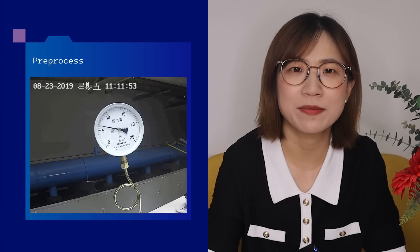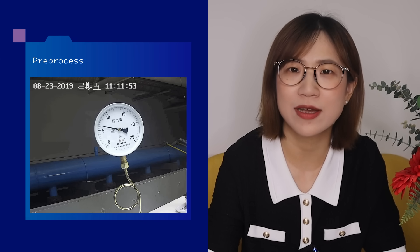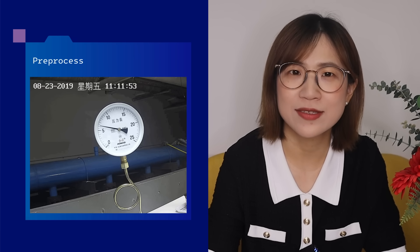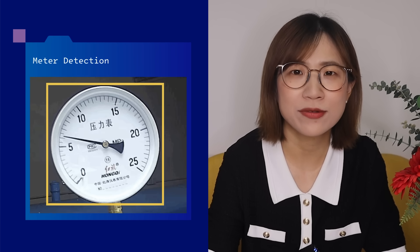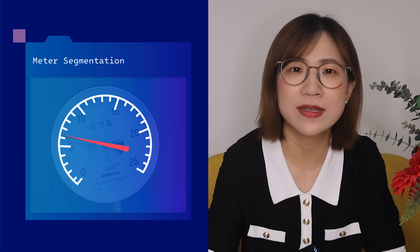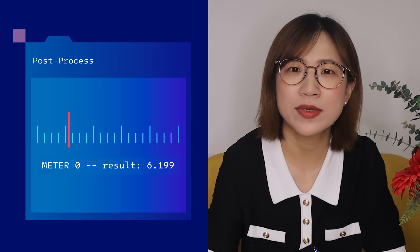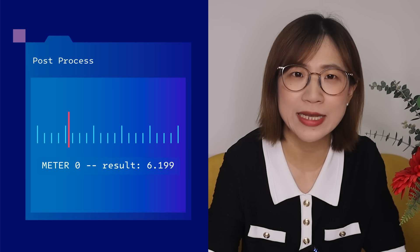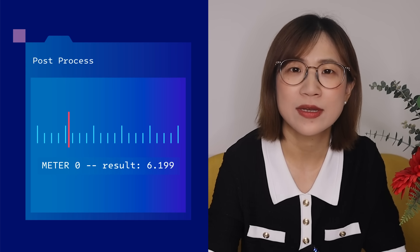Let's break this down into four steps. First, images of your meters are captured and processed. Second, images are run through a model to detect all of your meters. Third, your detected meters are then segmented to identify the pointers and scales. Finally, the pointer location is calculated on a scale map, giving you an accurate reading of the meter.